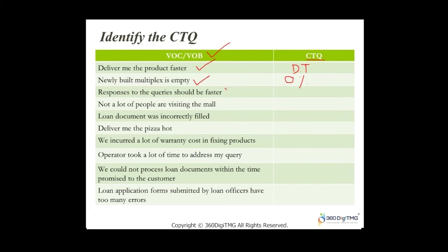'Responses to queries should be faster' — the corresponding CTQ is response time, and you want to reduce it. There might be metrics you want to reduce by implementing a Six Sigma project, and others you want to improve. 'Not a lot of people are visiting the mall' — I'd look into footfalls, the number of footfalls, and try to improve that metric.